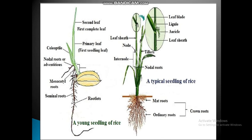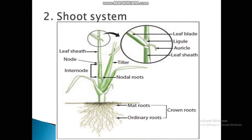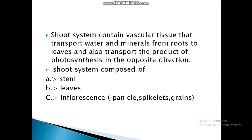The shoot system contains vascular tissue that transports water and minerals from the root to the leaves, and also transports the products of photosynthesis in the opposite direction. The shoot system is composed of the stem, leaves, and inflorescence. Inside the inflorescence, there are panicles, spikelets, and grains.